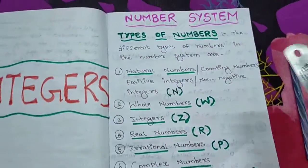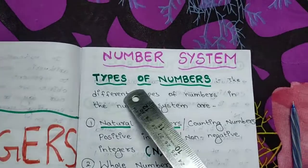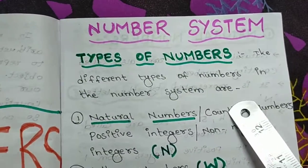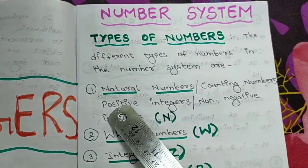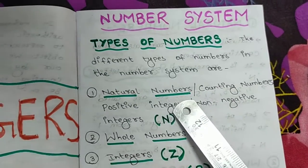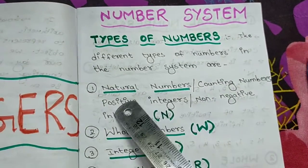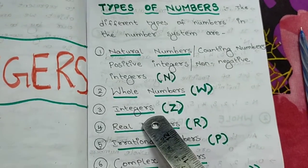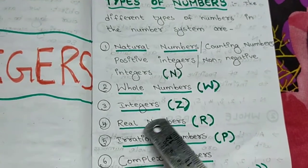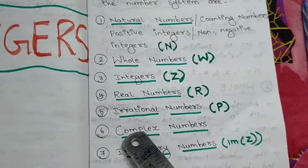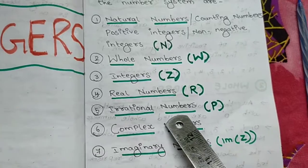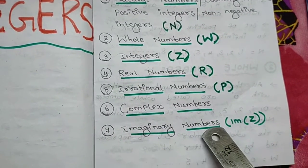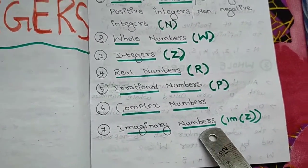There is something called the number system. And in the number system, we have different types of numbers. Let us see what those different types are. First is natural numbers. Whole numbers. Integers. Real numbers. Irrational numbers. Complex numbers. Imaginary numbers. You can repeat after me: natural numbers, whole numbers, integers, real numbers, irrational numbers, complex numbers, imaginary numbers.